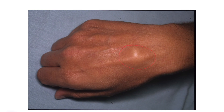This can present as a cyst or protuberance on the dorsum of the wrist and can be painful. It is commonly seen in tennis players and other racket sport activities such as table tennis and golf.